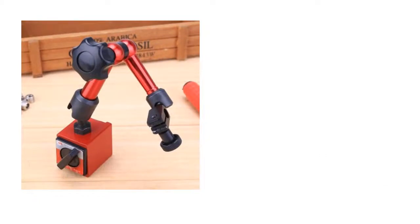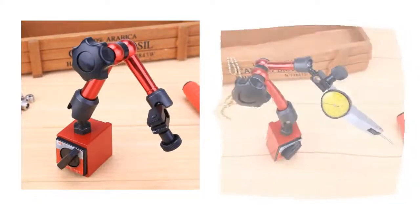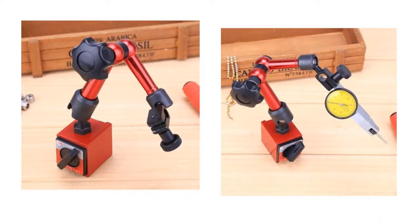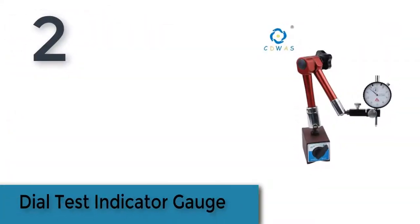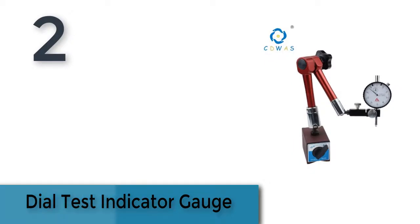Model number dial, dial indicators, dial indicators. The item number two is dial test indicator gauge.